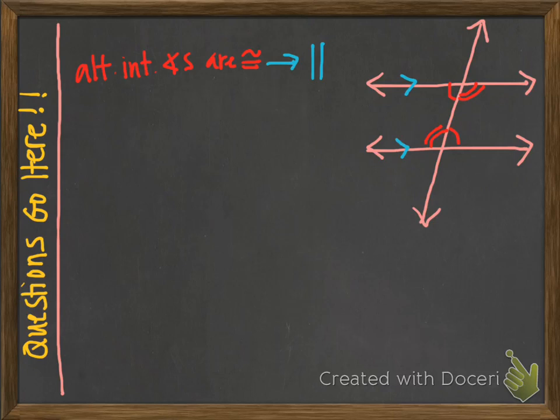Similarly, if our alternate exterior angles are congruent — just one pair is all you need — for example, if this angle is congruent to that angle, then we've got parallel lines.